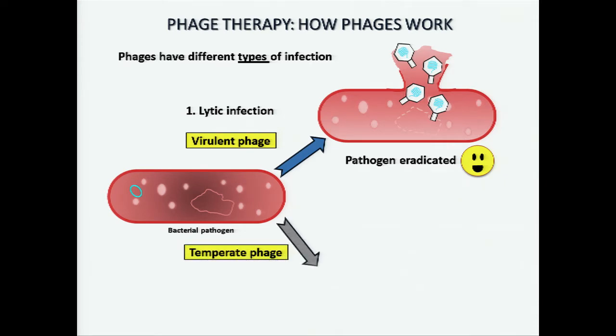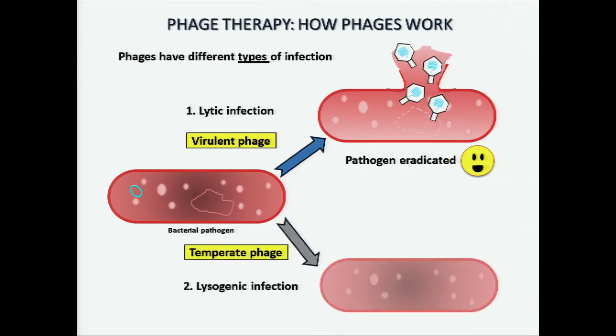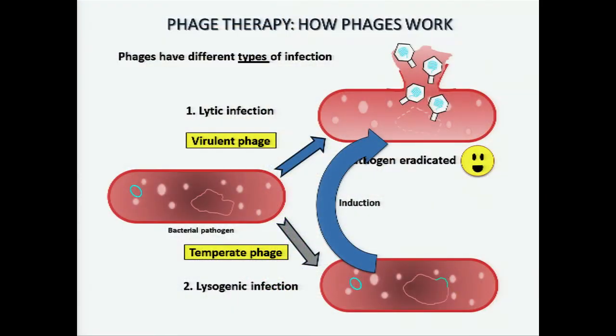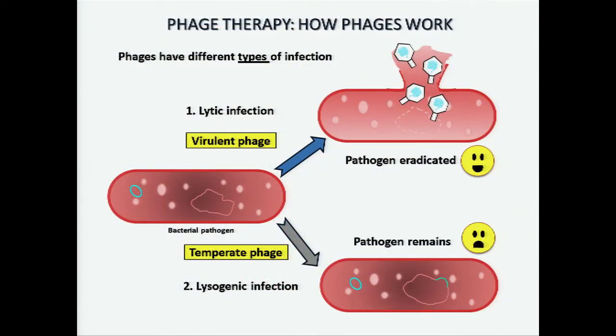Another type is a temperate phage. A temperate phage undergoes a lysogenic infection where, instead of reproducing inside the cell, the phage DNA inserts into the cell's DNA or hangs out extra-chromosomally inside the cell. With a virulent phage a pathogen is eradicated, but not with a temperate phage. Sometimes a temperate phage can be induced and undergo a lytic infection, but for the most part it is stable and does not eradicate the pathogen.